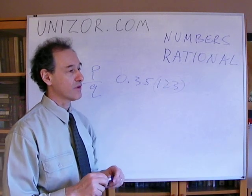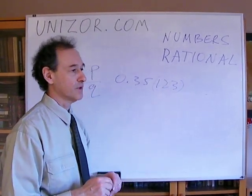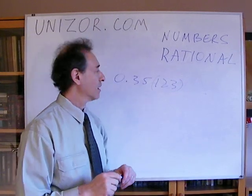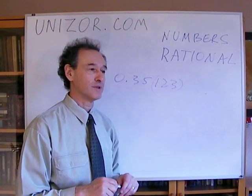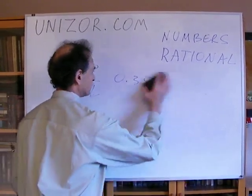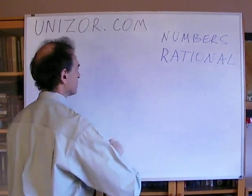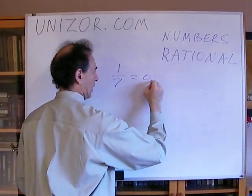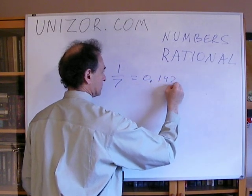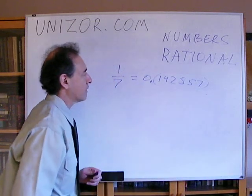Let me just give you a very interesting, funny, in a way, example of properties of this type of representation, periodic representation of rational numbers. If you want to represent one-seventh, it will be 0.142857 in period.